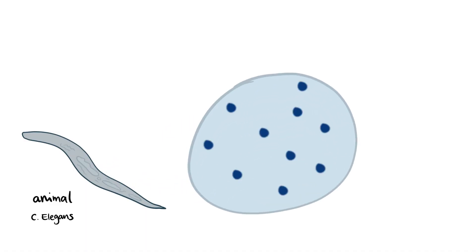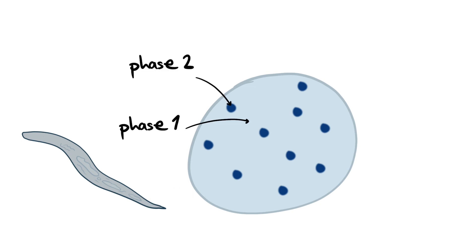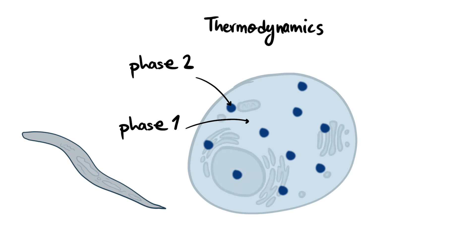Cells can be described as systems made of different phases, which are regions with uniform and well-defined physical properties. Despite the enormous complexity of living cells, thermodynamics has proven to be a helpful theoretical framework to understand phases in cells.